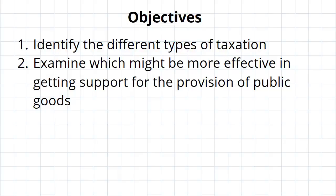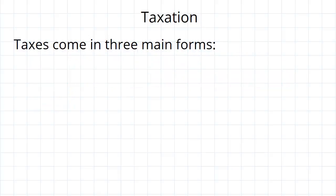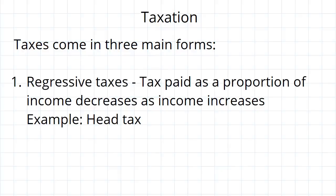Having determined that the free rider problem can be fixed via taxation, we now want to look at this topic in a little bit more detail, looking at the different types of taxation and which is actually more effective in getting public goods funded. There are three main types of tax. The first is regressive taxes.